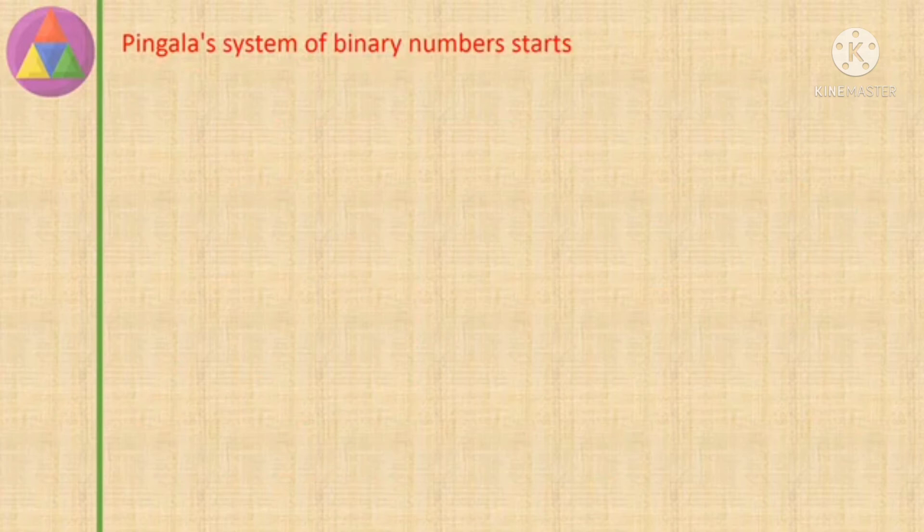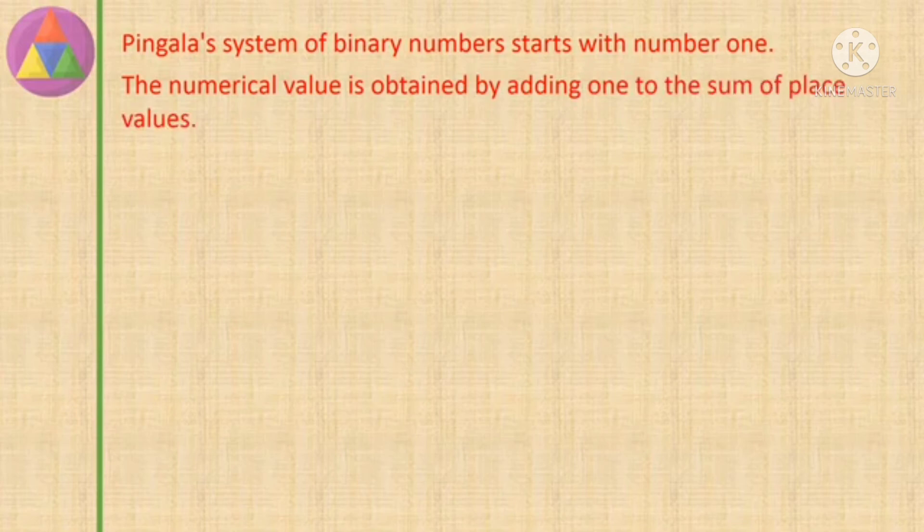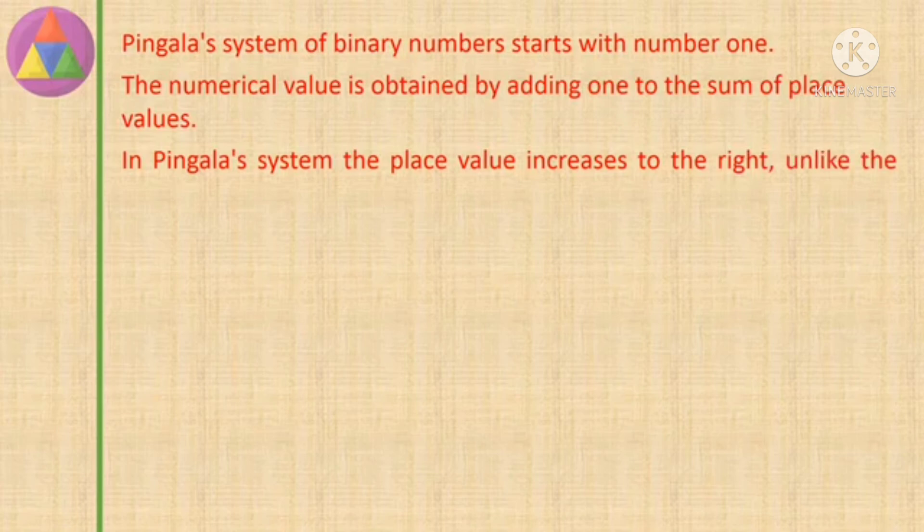Pingala's system of binary numbers starts with number 1. The numerical value is obtained by adding 1 to the sum of place values. In Pingala's system the place value increases to the right, unlike the modern notation in which it increases towards the left.